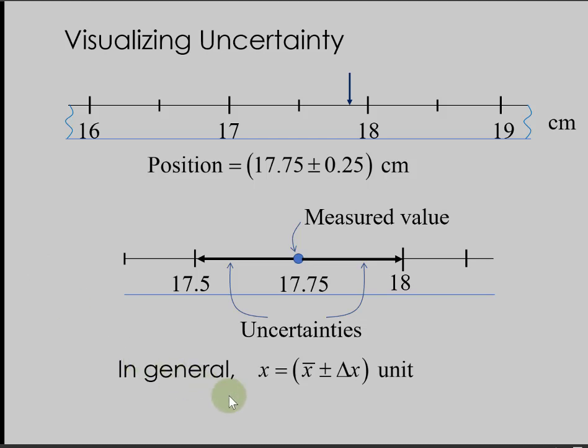In general, any measurement x can be written in terms of the average value plus-minus the uncertainty Δx and the unit.